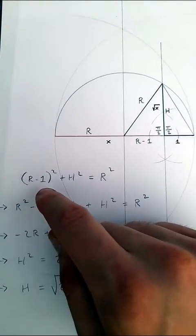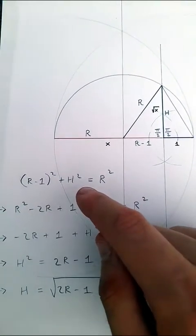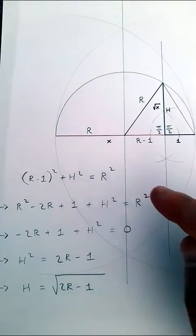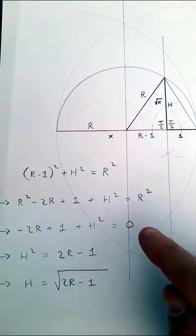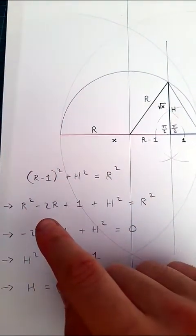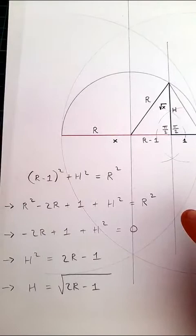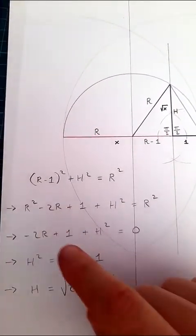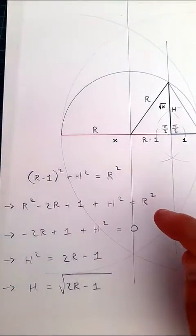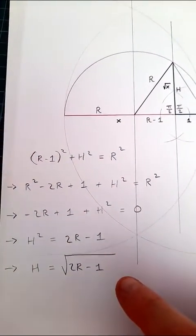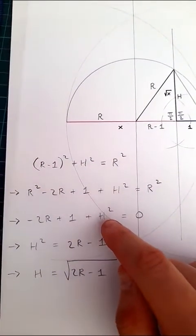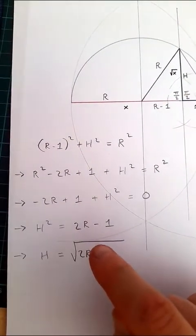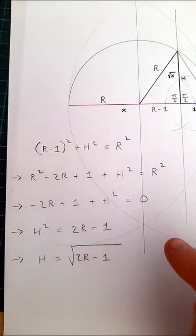So, we have r minus 1 squared plus h squared is equal to r squared. If we expand this equation, we get this over here. Then we subtract radius squared from both sides of this equation. That's going to leave us with this. And then we get h squared is equal to 2r minus 1.